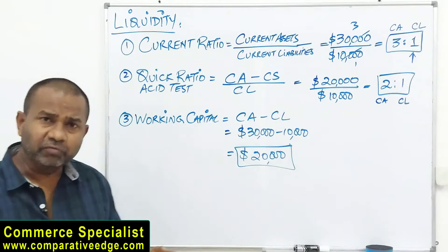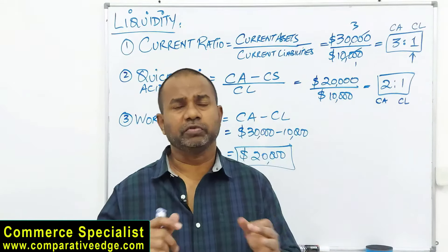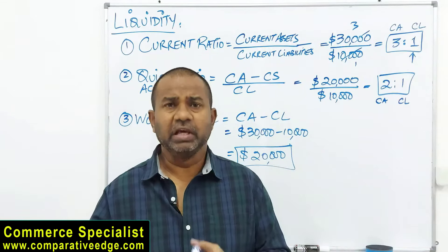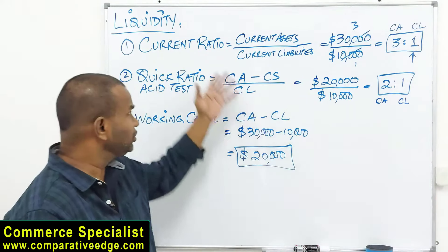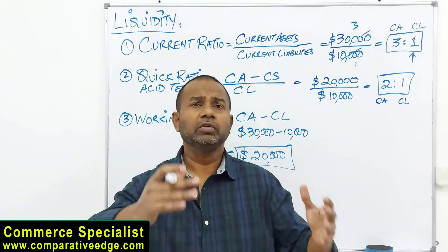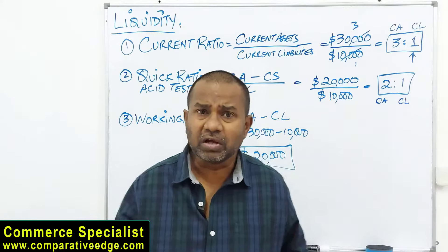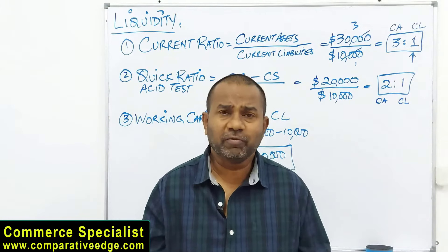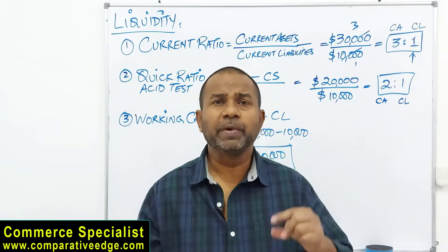These three ratios — current ratio, quick ratio, and working capital — are the basic ones that help us understand the company's liquidity position, meaning its debt-paying ability. These ratios are simple yet powerful — they tell you about your potential investment. If a company cannot pay its liabilities today, and tomorrow you become the owner, you won't have enough money. So you want to invest in a company that can pay its liabilities on time.